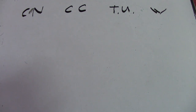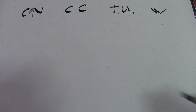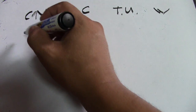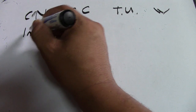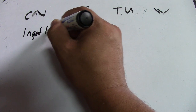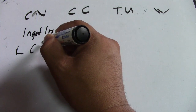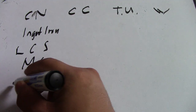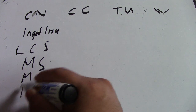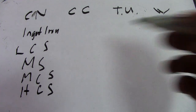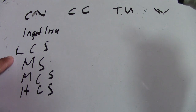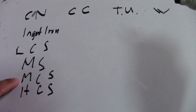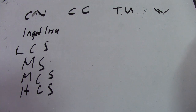For the common names, we have: ingot iron, low carbon steel (LCS), mild steel (MS), medium carbon steel (MCS), and high carbon steel. I will use these abbreviations going forward.